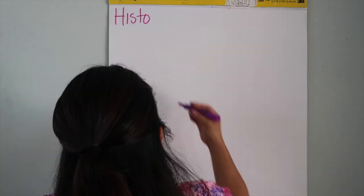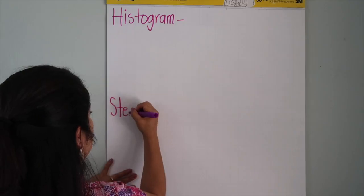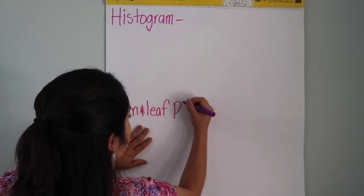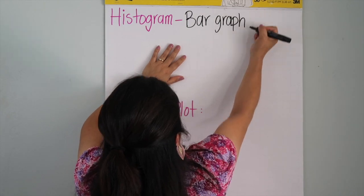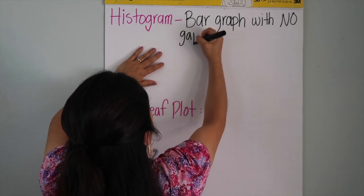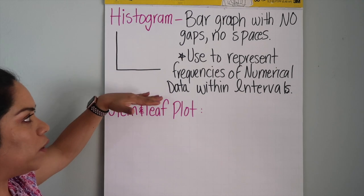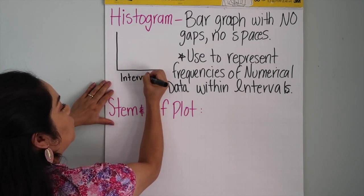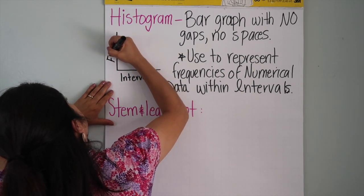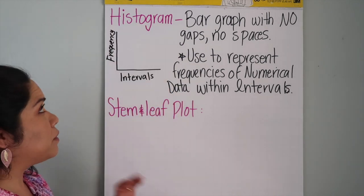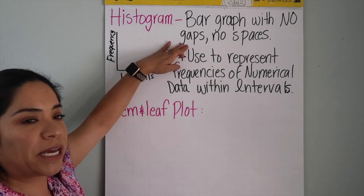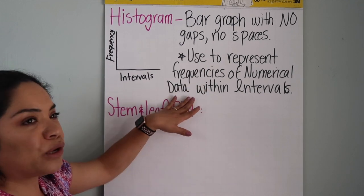What is a histogram? A histogram is basically a bar graph, a bar graph with no gaps in between, no spaces in between, and is used to represent frequencies of numerical data within intervals.